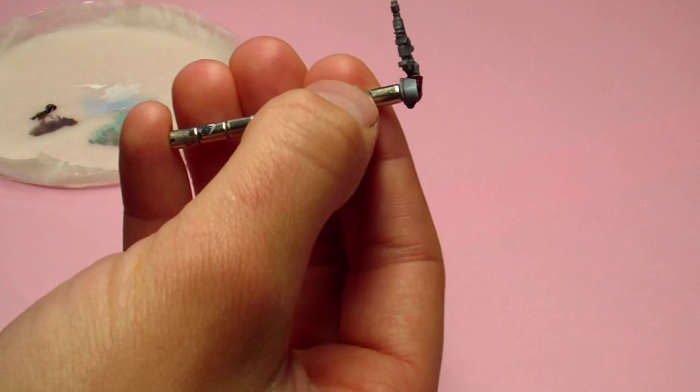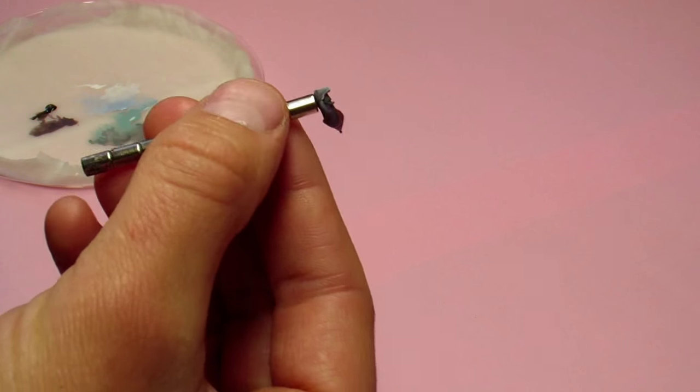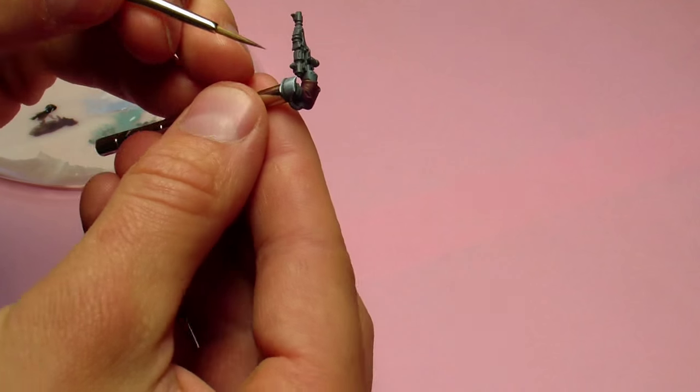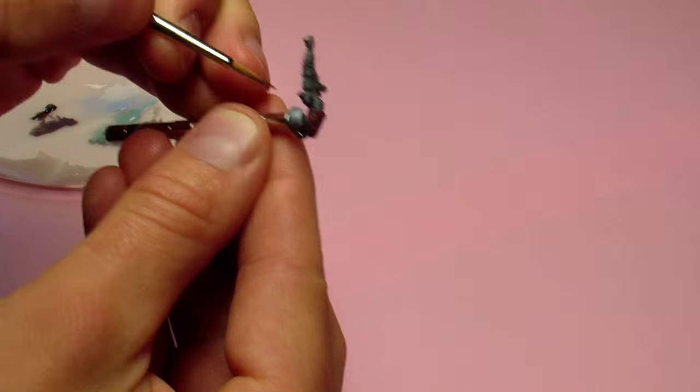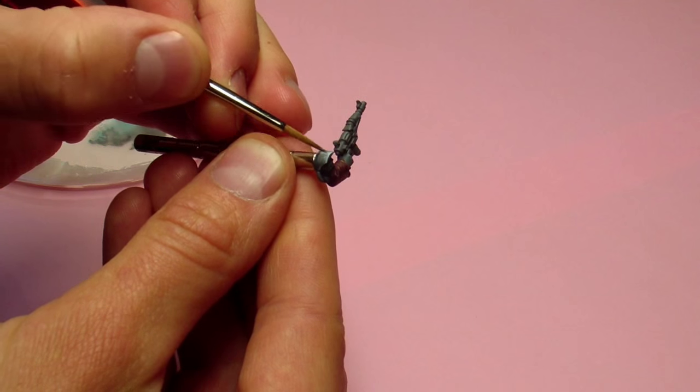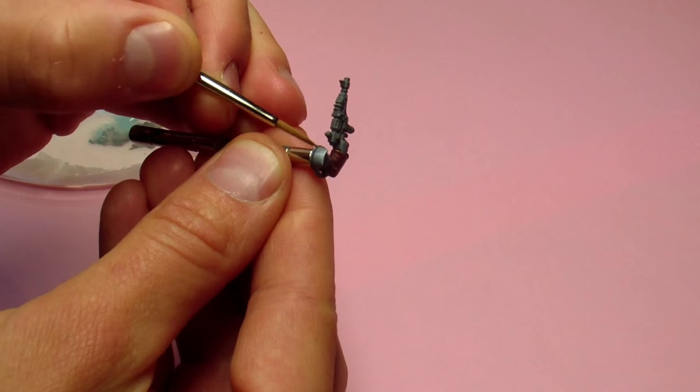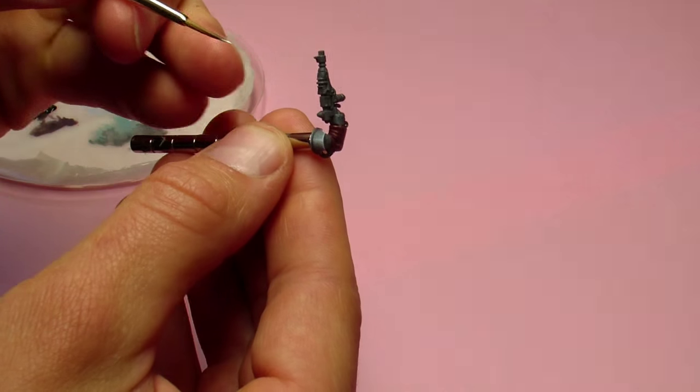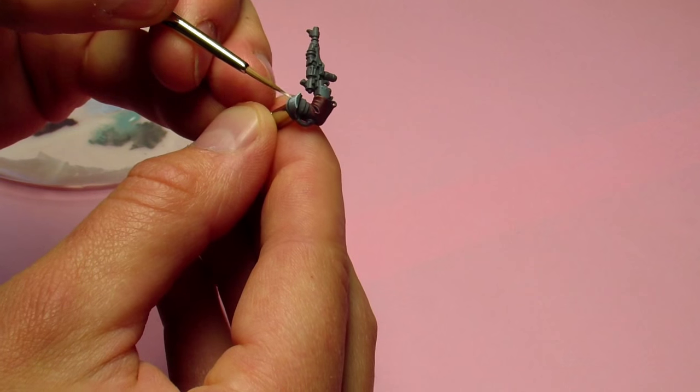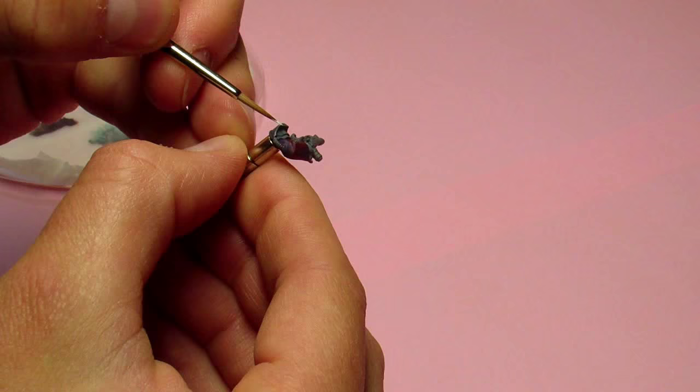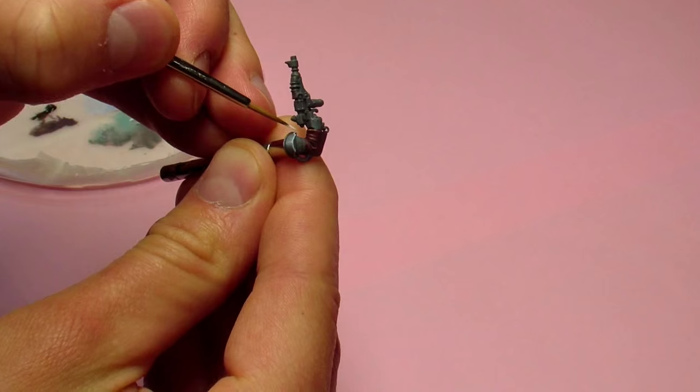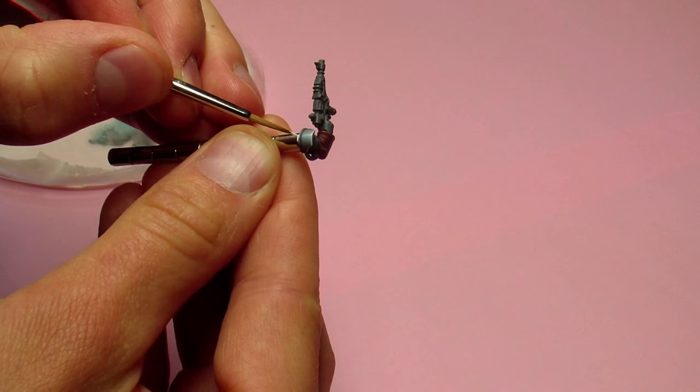Of course we can smooth it a little bit using our brighter colors. But it is all up to you and you have to take it to the place where you are happy with your effects. So now it is good to paint some edge highlights using pure white to create contrast and illusion of metallic surface.